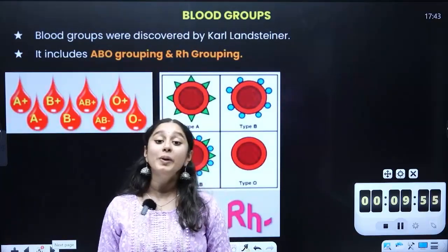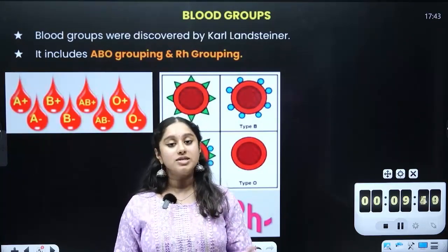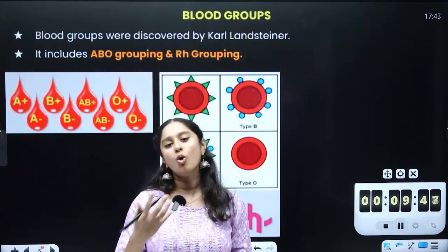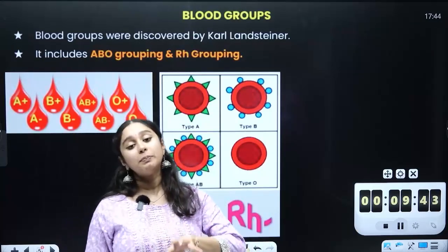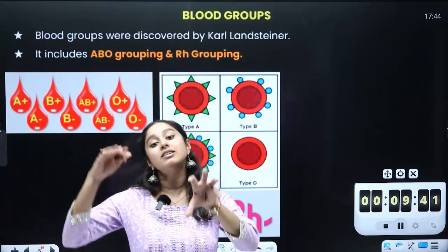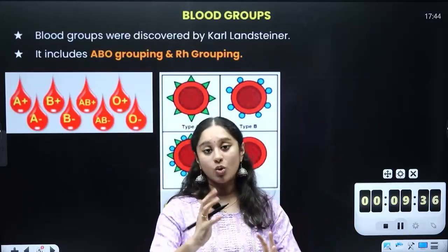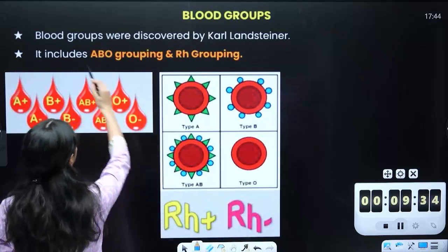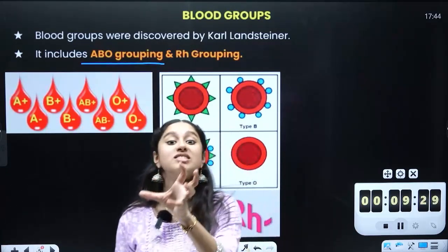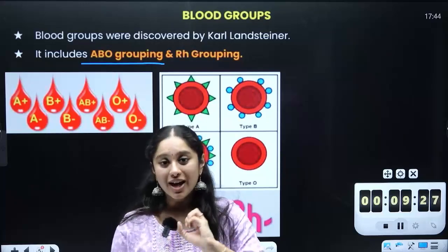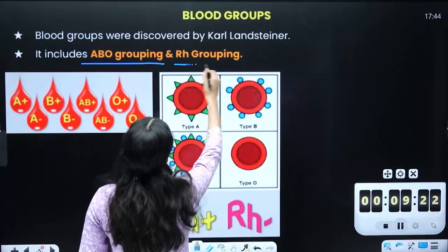Blood grouping — this is a very common topic. We have a lot of blood groups: A positive, B positive, O positive, O negative, AB negative. There are predominantly two systems. One is the ABO grouping system — A, B, O, AB. The other system is the RH grouping — that is what gives us positive or negative, like A positive or O negative.